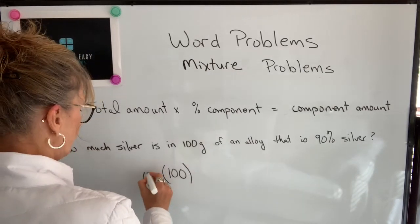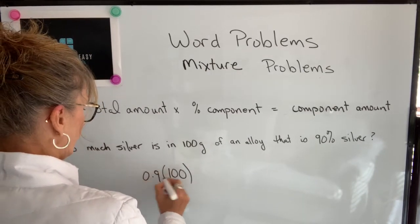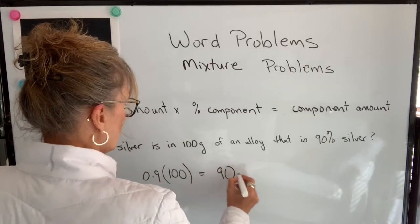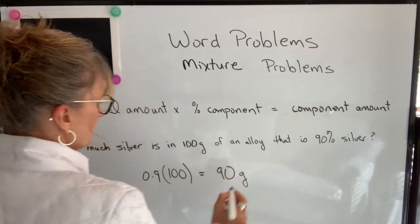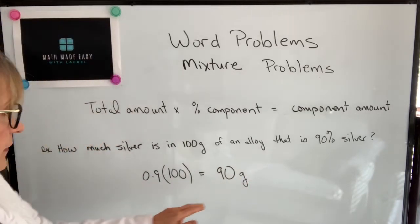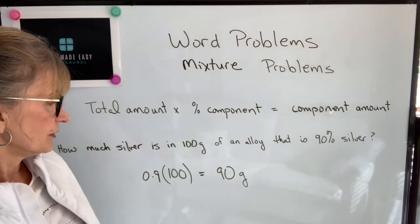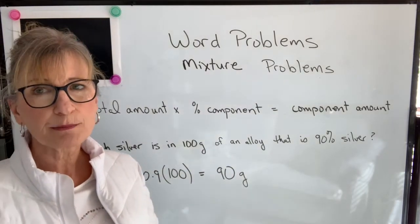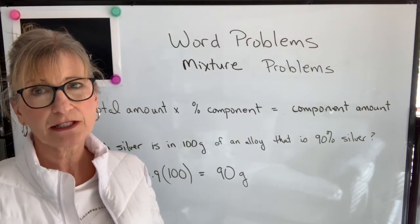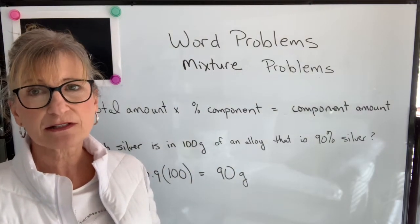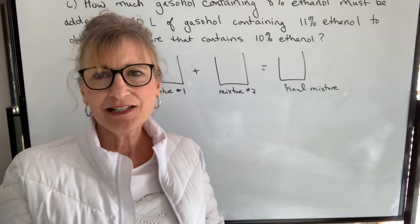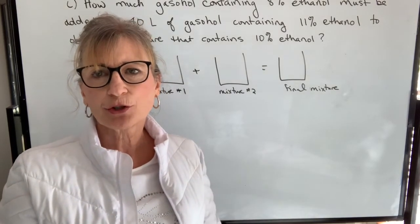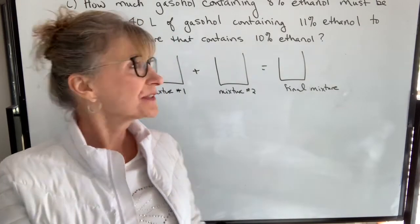...you take the 100 grams and multiply by 0.9 — you have to change 90% to a decimal — and that gives us 90 grams of actual silver in 100 grams of an alloy that contains 90% silver. Let's take a look at how we use that relationship in solving these mixture problems.